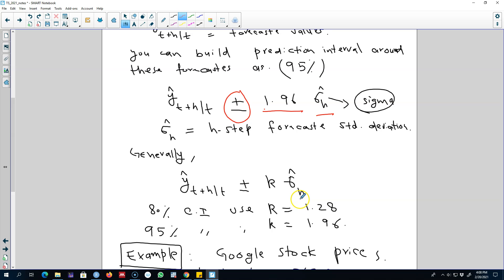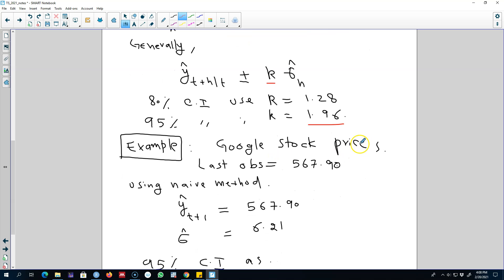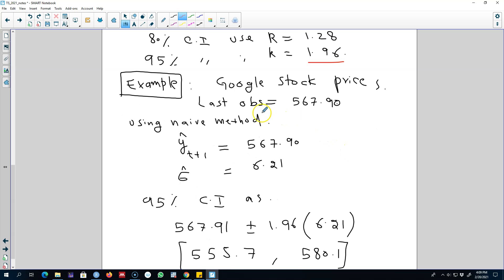For the 80% confidence interval we'll use the value of K as 1.28, and for 95% confidence interval we'll use a value of 1.96.